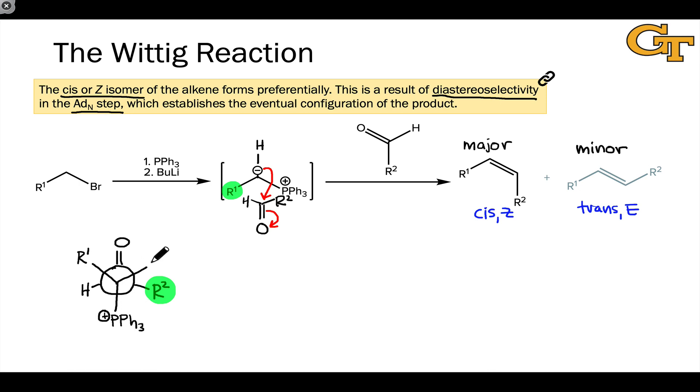This places the hydrogen, relatively small hydrogen, gauche to the R2 group. The key really is that the relatively bulky R1 and R2 groups prefer to be anti or in an anti-orientation in the lowest energy transition state for this process.